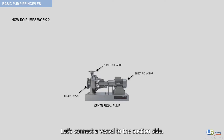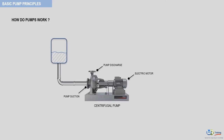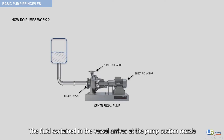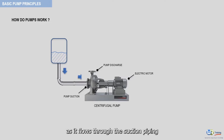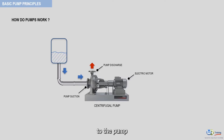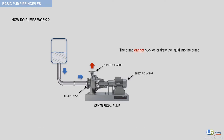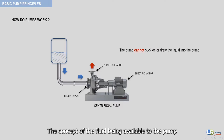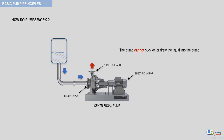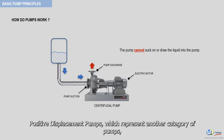Let's connect a vessel to the suction side. The fluid contained in the vessel arrives at the pump suction nozzle. As it flows through the suction piping, the fluid must be available to the pump with sufficient energy so that the pump can work with the fluid's energy. The pump cannot suck on or draw the liquid into the pump. The concept of the fluid being available to the pump will be discussed in detail in the next section.